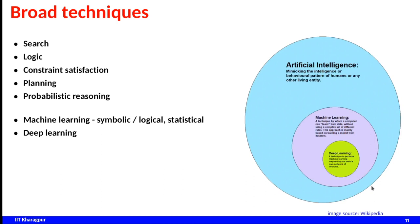To give a broad overview: AI encompasses everything, machine learning is a subset of AI, and deep learning is a special subset of machine learning that uses neural network-based methodology to solve problems. AI in general encompasses many different areas in its domain.